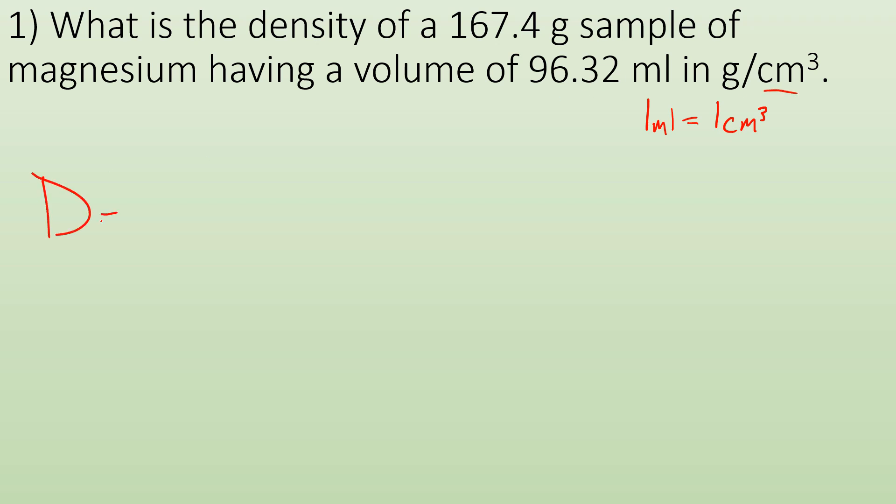So we know density is mass divided by volume. So you can just plug in those numbers, 167.4 grams divided by 96.32 milliliters. And you'd plug them into your calculator and it would lie to you and it would tell you you got 1.737956811, you'd probably keep going, grams per milliliter.